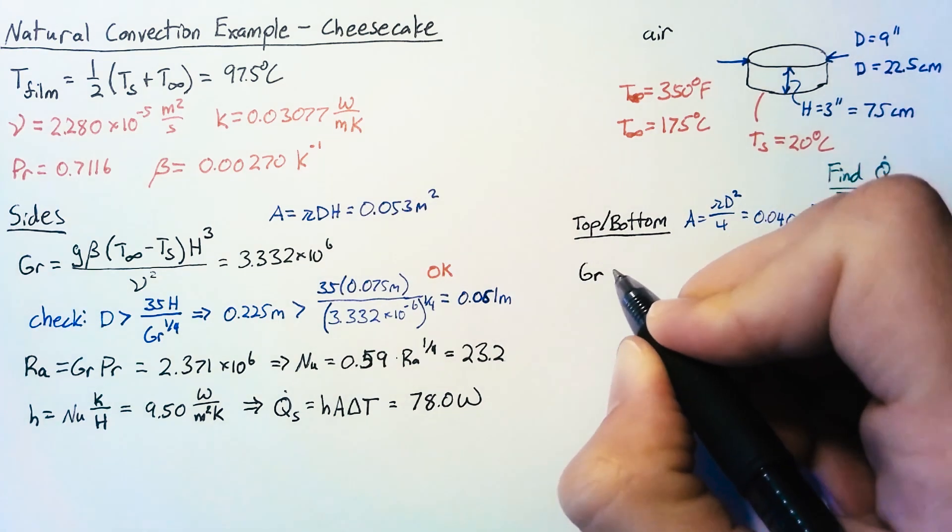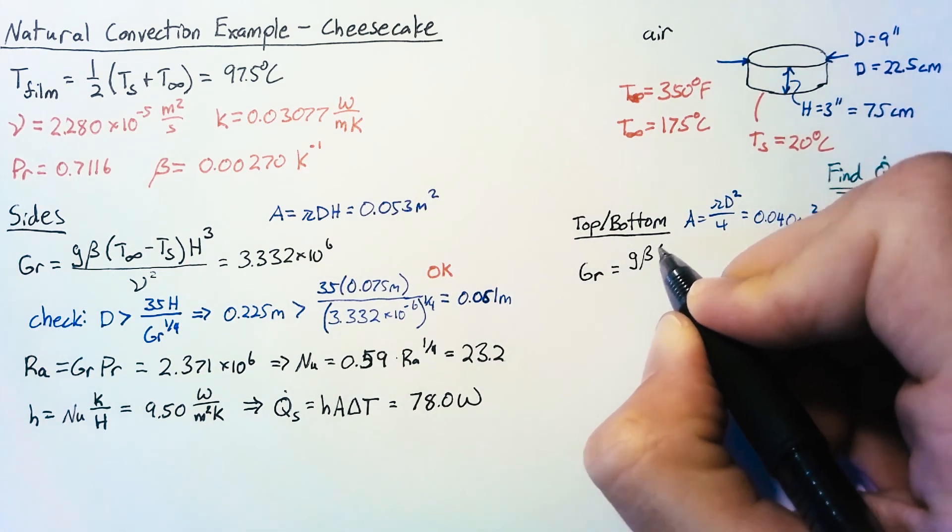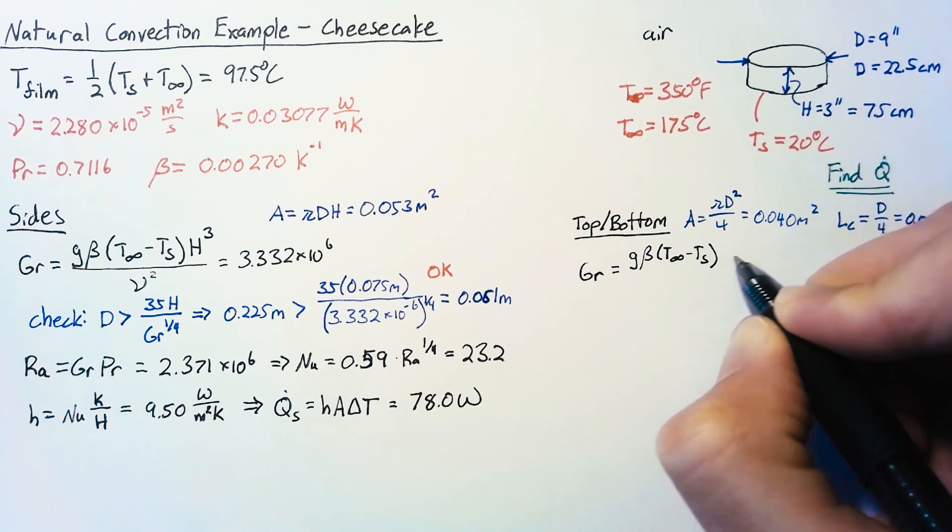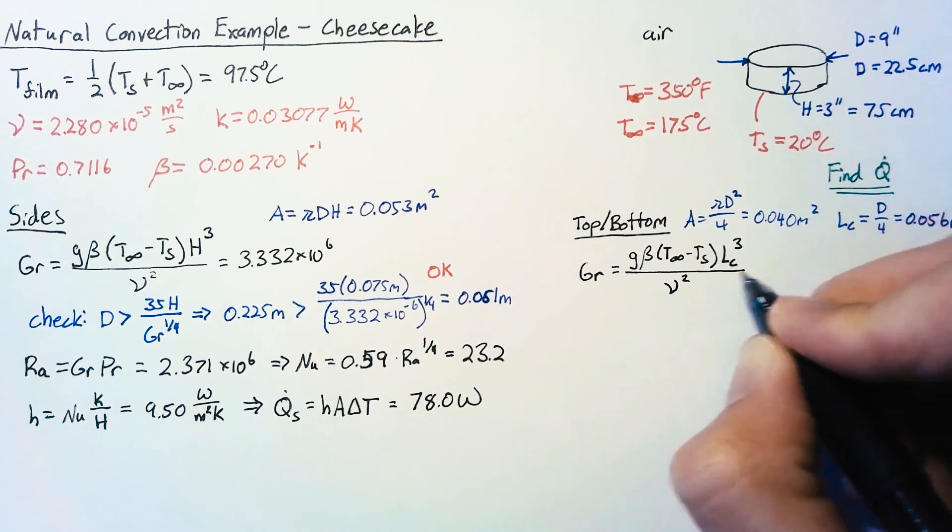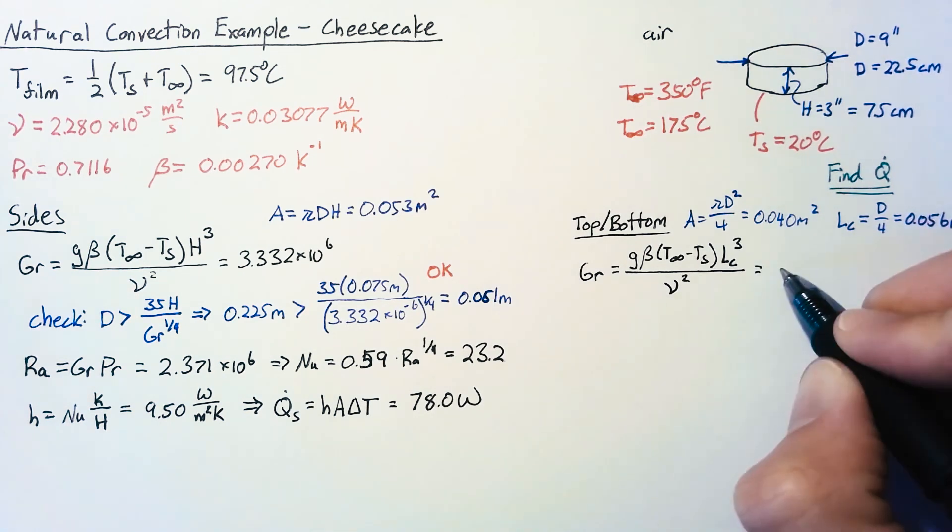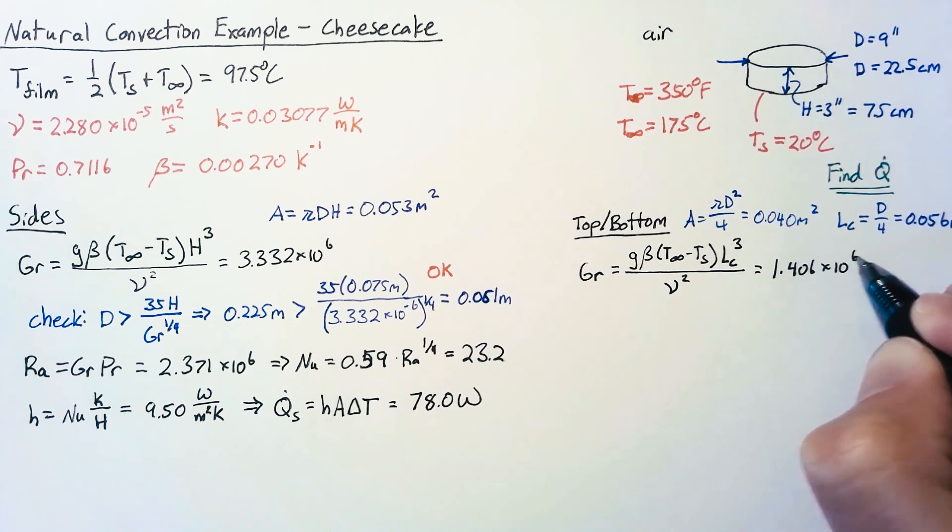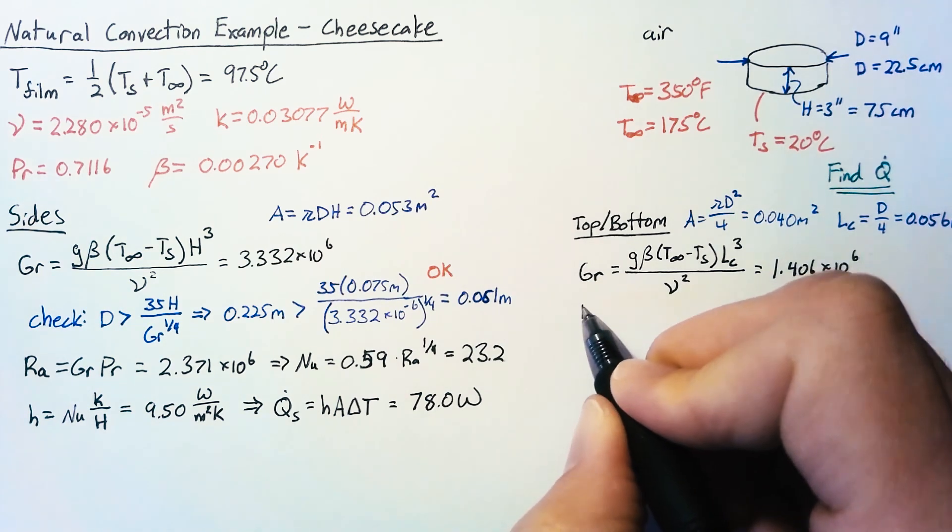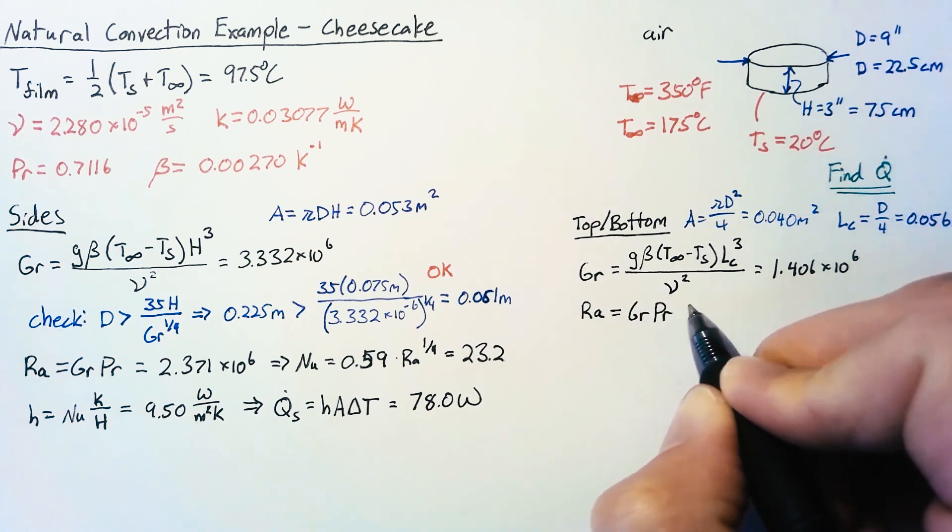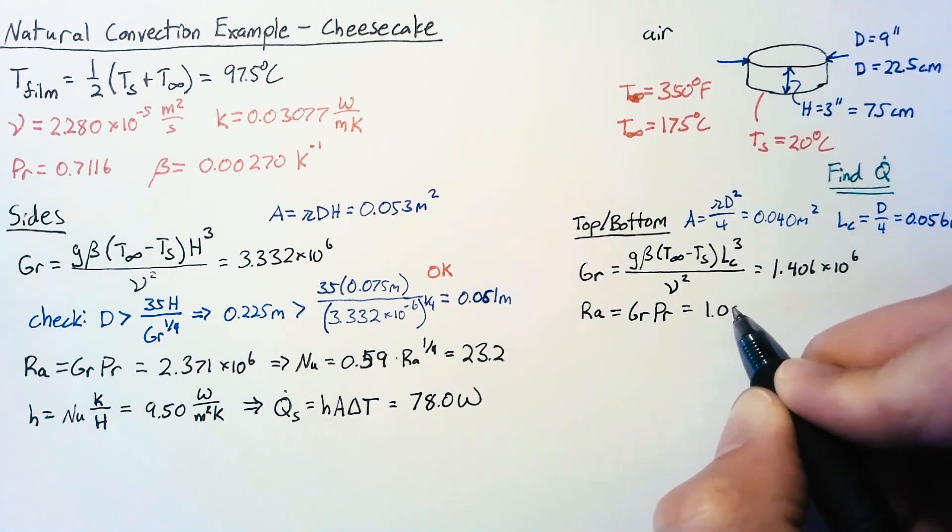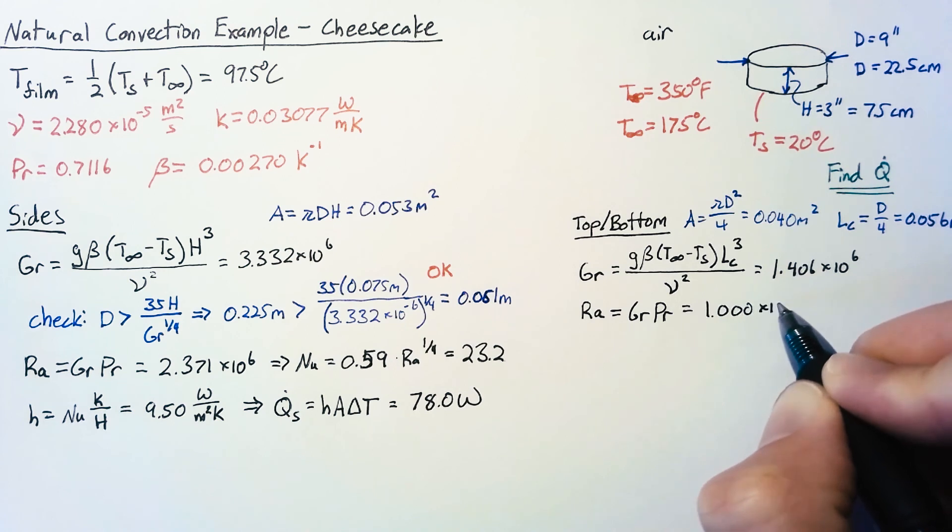So our Grashof number is the same formula as before but this time we need to use that characteristic length that D over 4. What we end up with from this equation is 1.406 times 10 to the sixth. There's no checks to perform so we can straight away go to our Rayleigh number which is just Grashof times Prandtl and this ends up being almost exactly one million.